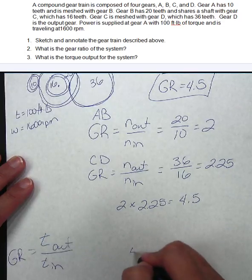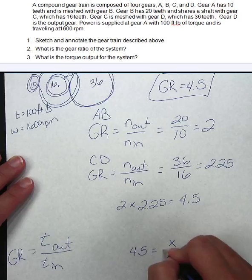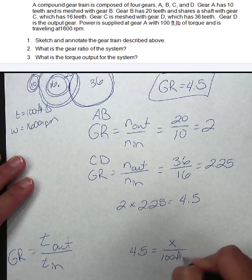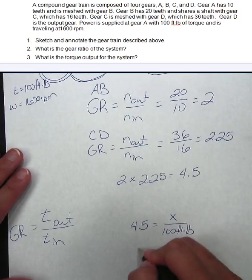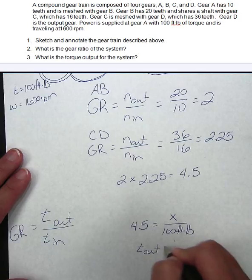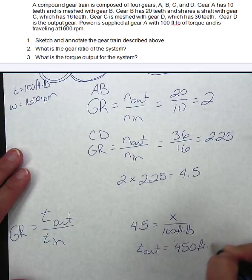Alright, well my gear ratio is 4.5. My torque out is what I'm trying to find, and my torque in is 100 foot-pounds. And multiply those together. Okay, 4.5 times 100, and it means that my torque out equals 450 foot-pounds.